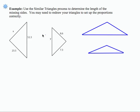In this example we're asked to use similar triangles to determine the lengths of two missing sides. These triangles are similar but they're drawn in kind of a weird way, so if there's any doubt whatsoever in your mind about how the sides are proportional to each other, I recommend that you redraw the triangles so that you can see the information very clearly.